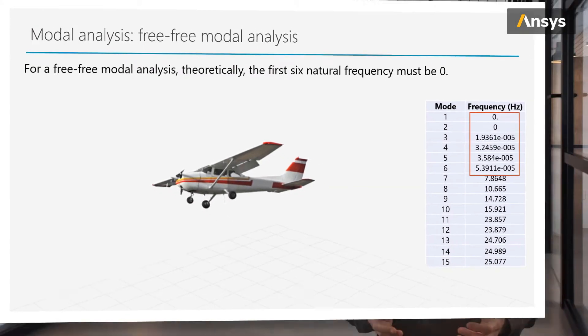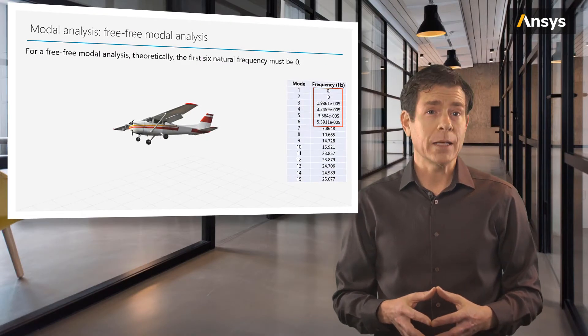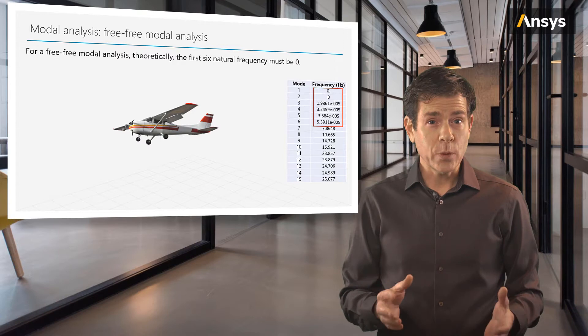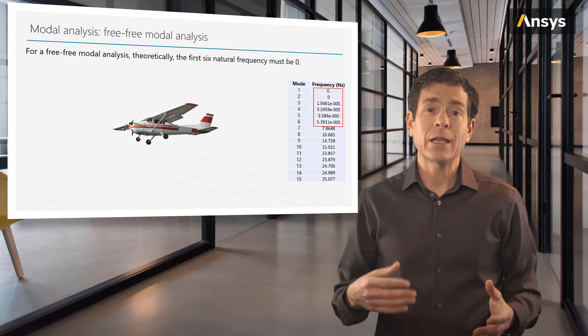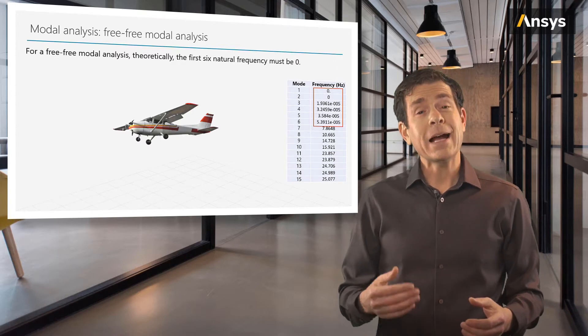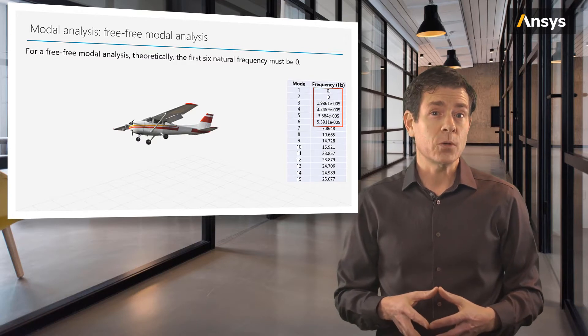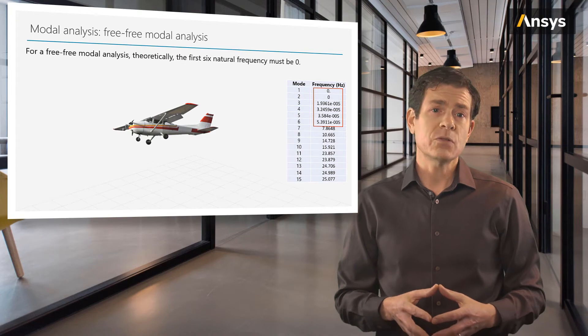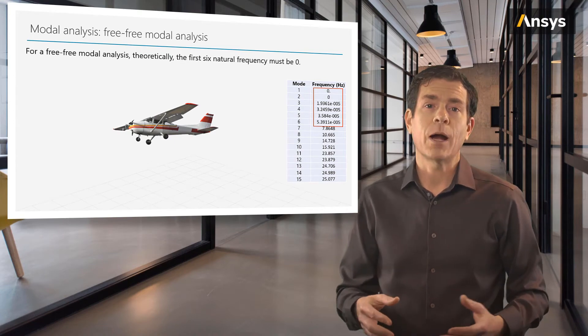Keep in mind that there will be six free modes for every free body. If we built our light aircraft model and we did not attach the two wings to the fuselage and then ran the modal analysis, we would actually have six times three or 18 rigid body modes, six for each part. So sometimes modal analysis is used to check if parts of our model are properly connected.